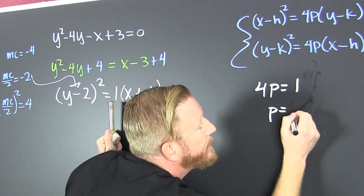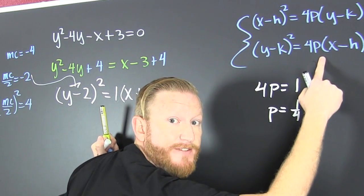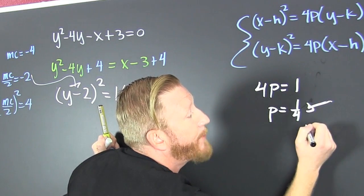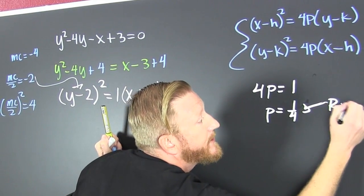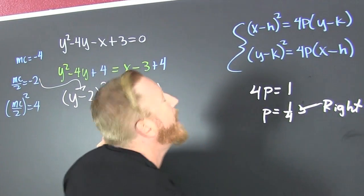So I'm going to match this guy up with 4p. So then 4p is going to be 1. Now, p is equal to 1 fourth. Since it's this guy, it opens left and right. Since p is positive, that opens right.